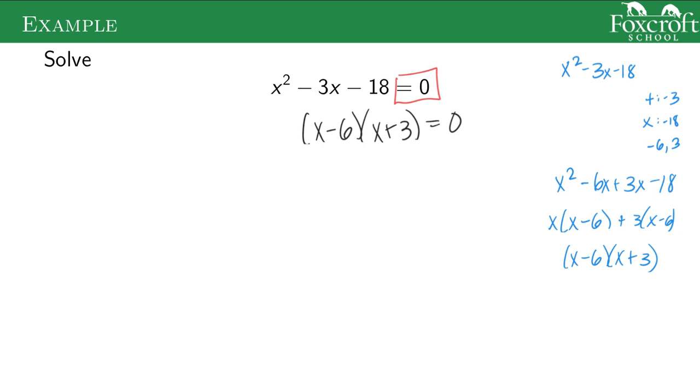Now we can use the zero product property, take our two factors x minus six and x plus three, and set those equal to zero. In these cases solving these equations are both one step: add six, subtract three. These are our two solutions. You can see if you were to plug in either of these numbers, you would get zero.